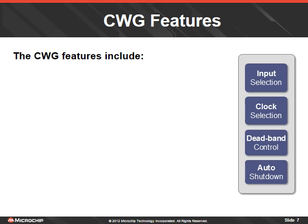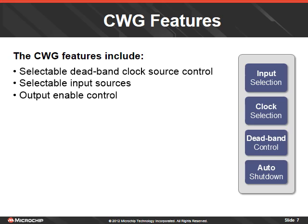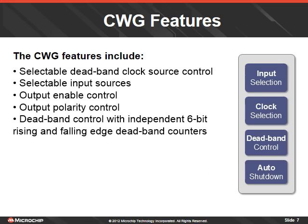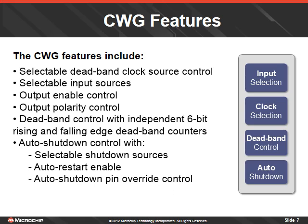The CWG features include selectable deadband clock source control, selectable input sources, output enable control, output polarity control, deadband control with independent 6-bit rising and falling edge deadband counters, auto shutdown control with selectable shutdown sources, auto restart enable, and auto shutdown pin override control. We'll cover these in future slides.